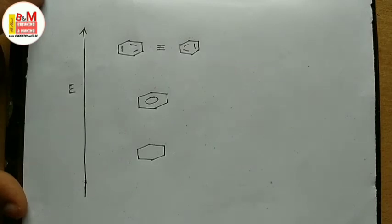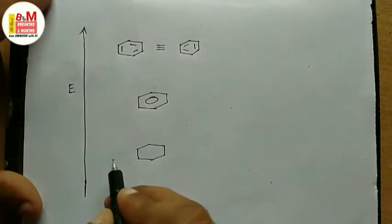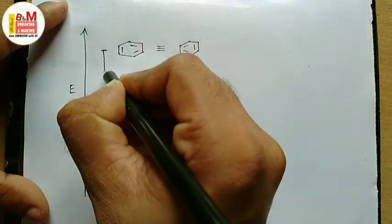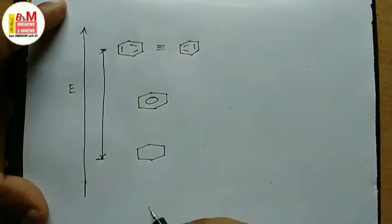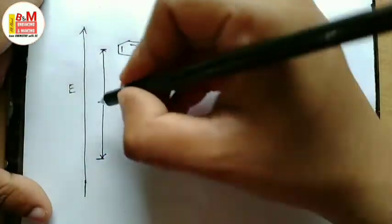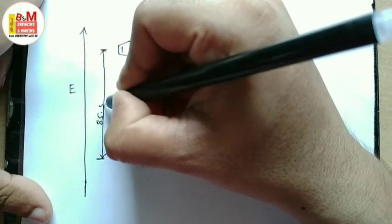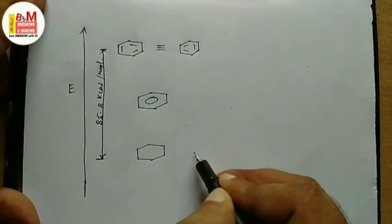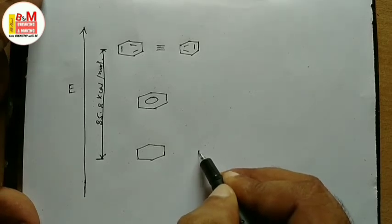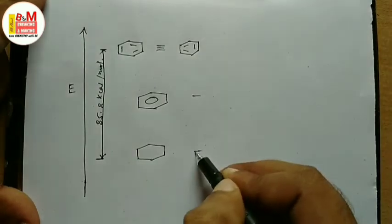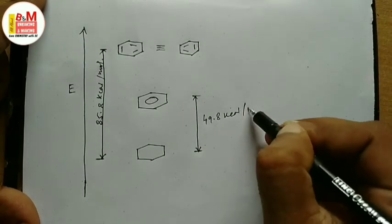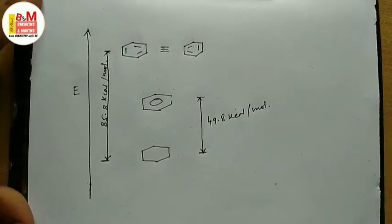This lower level represents the normal cyclohexane. We have calculated that going from the canonical structure level to the cyclohexane level requires an energy barrier of 3 times 28.6 kilocalorie per mole, which is 85.8 kilocalorie per mole. To go from the resonance hybrid level to cyclohexane requires passing through an energy barrier of 49.8 kilocalorie per mole, as reported from experiments.